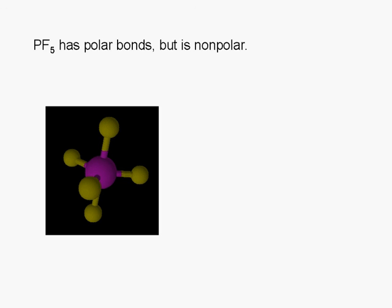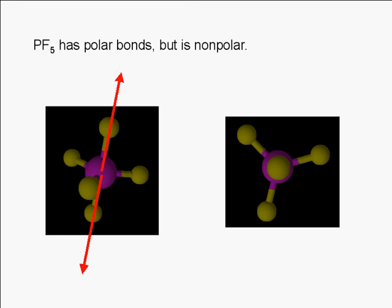Imagine one phosphorus fluorine bond as pointing to the north pole. Its polarity is canceled out by another phosphorus fluorine bond pointing to the south pole. Here's a view of the molecule from the top so you can see the symmetry of the other three phosphorus fluorine bonds. The three equatorial phosphorus fluorine bonds are on the same plane and are 120 degrees apart.